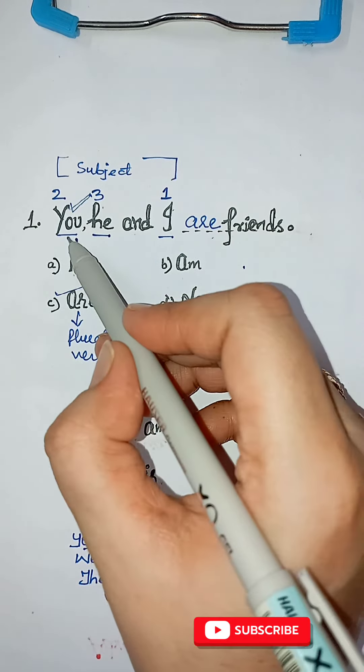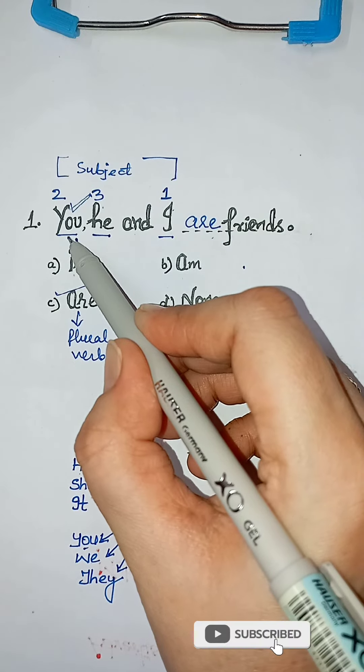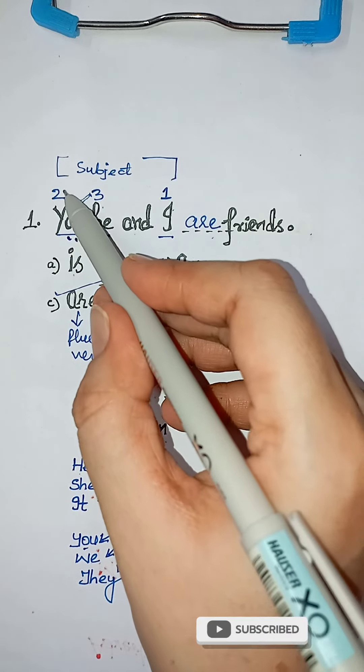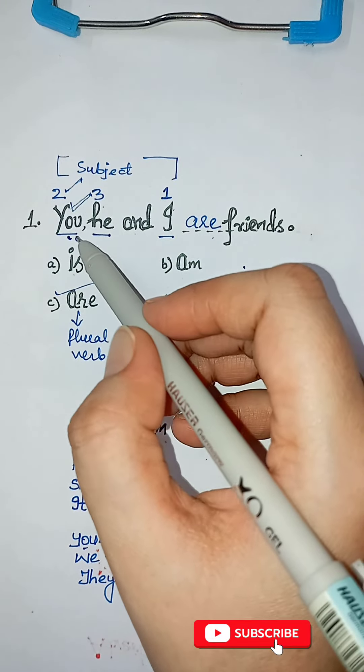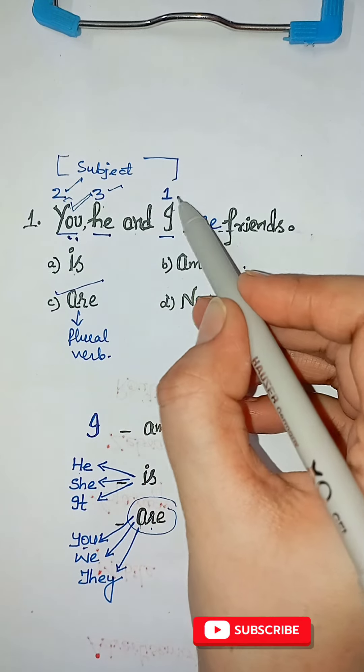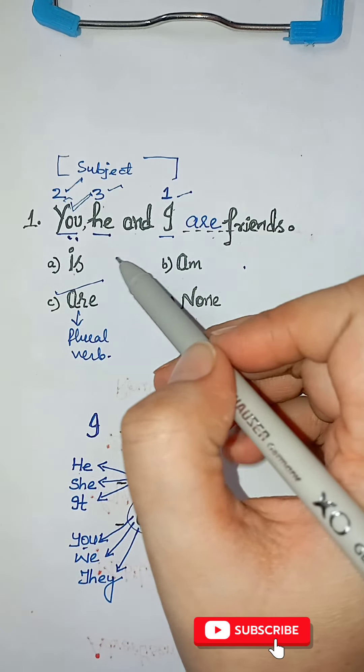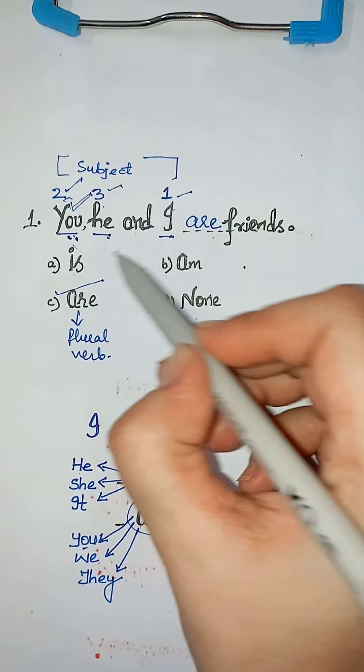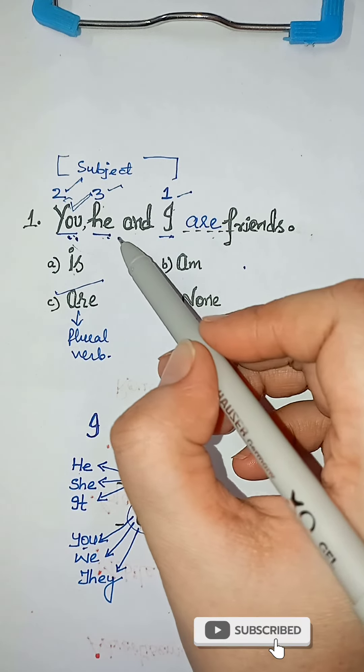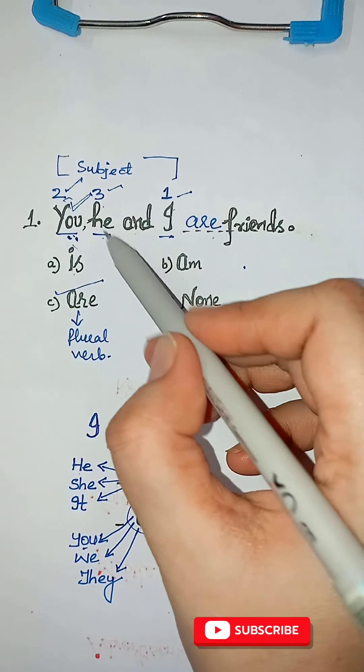Okay, you have to take the verb same as what you have got for the first one. That's the second person. Whenever you have two, three, one or he, she, you, he and I as subject together, they are we.